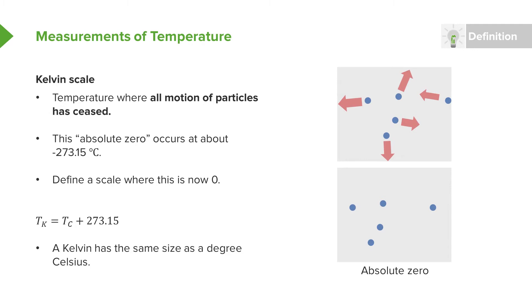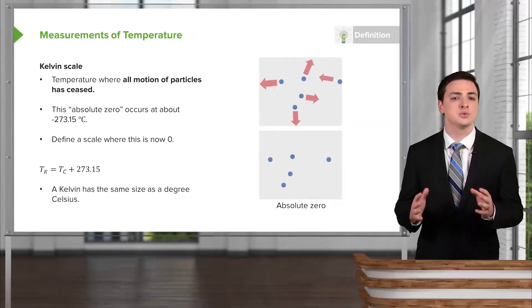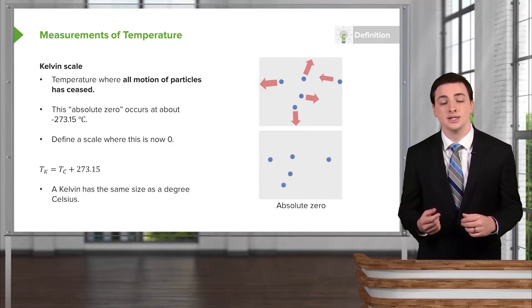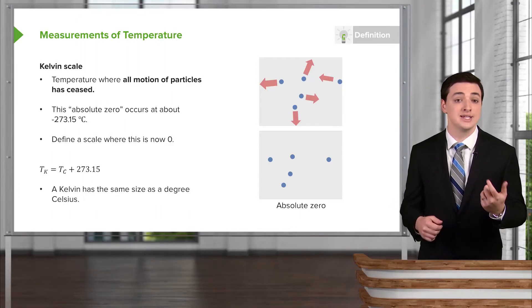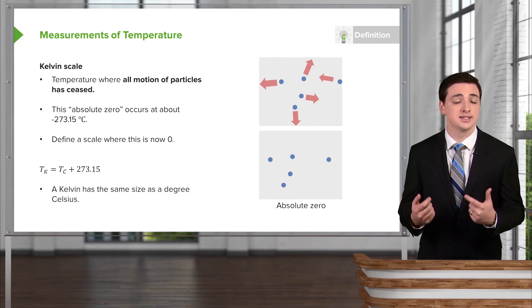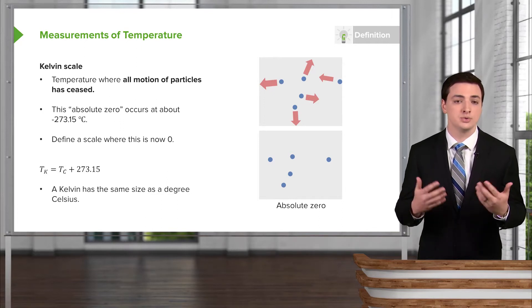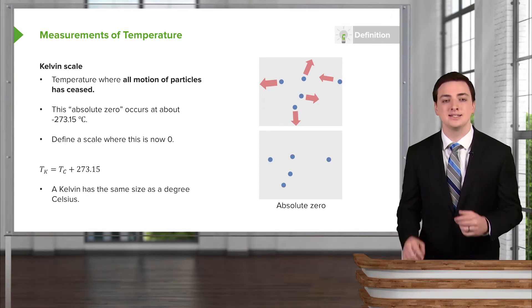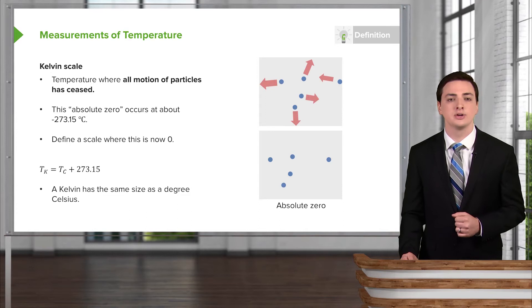Also, very importantly, since all we've done is shifted our Celsius scale, we haven't multiplied it by any scaling numbers or anything like that. The size of what we would call a Kelvin is the same size as a degree Celsius. And for example, this would not be the case for a comparison between Celsius and Fahrenheit. A degree Fahrenheit and a degree Celsius are actually different in size, whereas a degree Kelvin, which we actually simply call a Kelvin rather than a degree Kelvin, is the same size as a degree in Celsius. And we'll be using this fact later on.